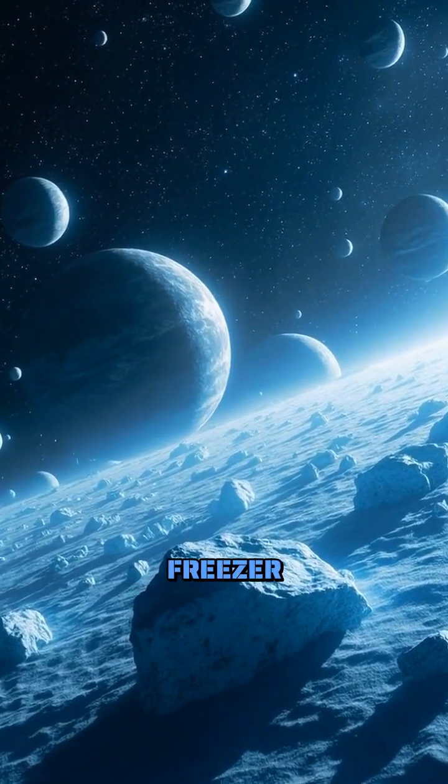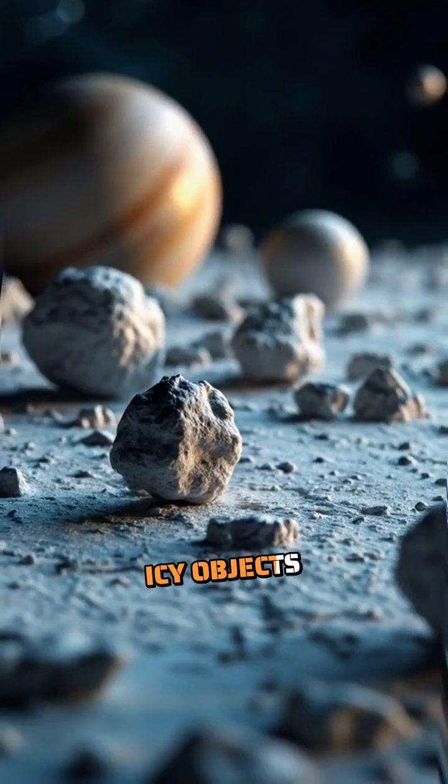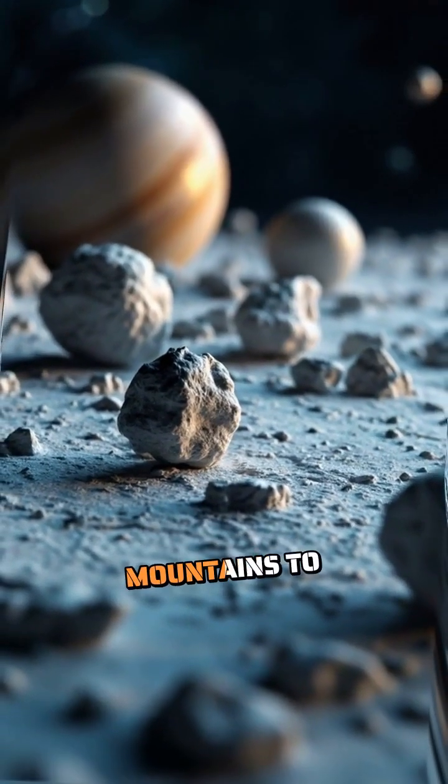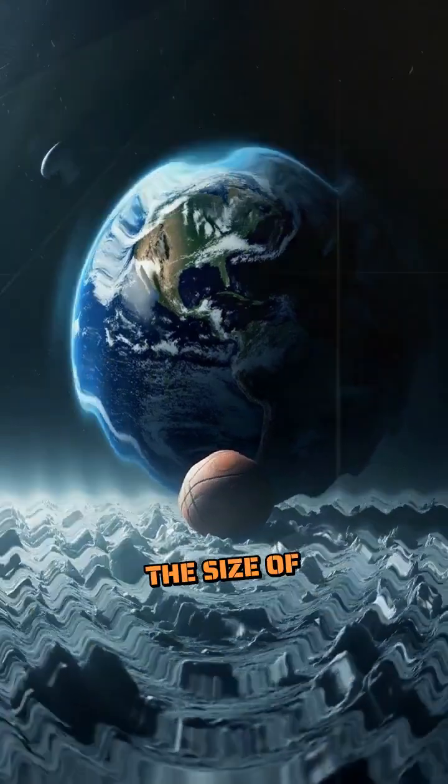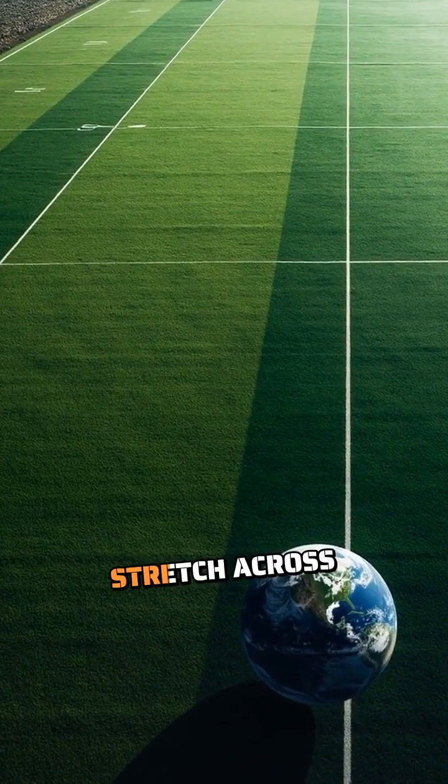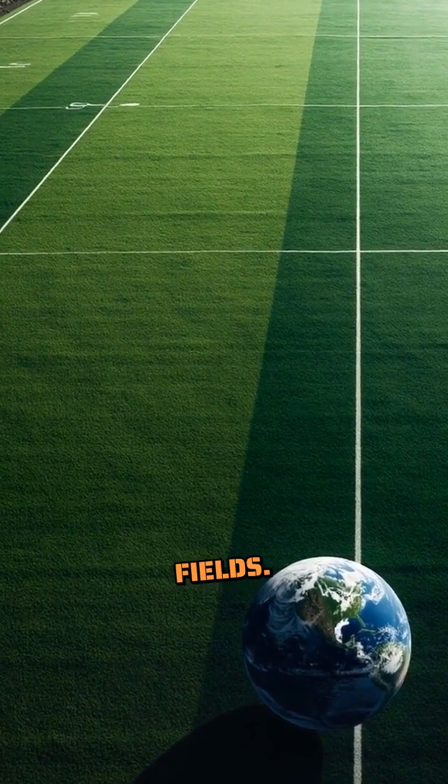The Kuiper Belt is like a cosmic deep freezer containing millions of icy objects ranging from the size of small mountains to dwarf planets like Pluto. If Earth were the size of a basketball, the Kuiper Belt would stretch across 30 football fields. That's enormous!